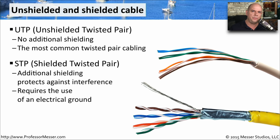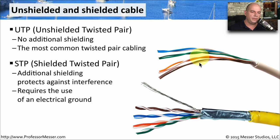It's very common to see STP used in environments like a factory or anywhere with a lot of radio interference, so you can help protect the signal inside that cable. Another feature in an STP cable that's different from UTP is a ground cable, which allows you to keep the same ground across that very long distance on both sides of those connectors.